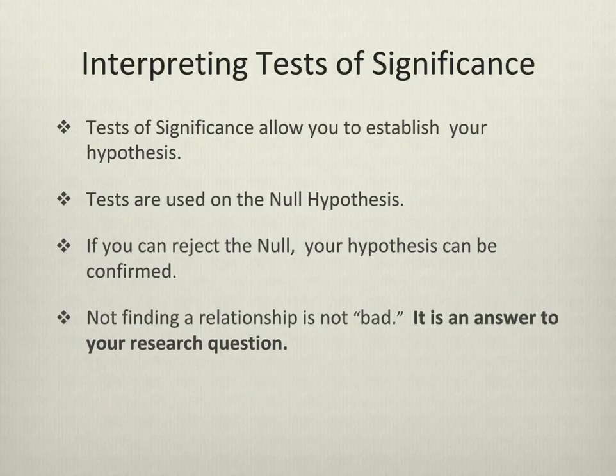Tests of significance allow you to test your hypothesis by testing the null. If there is not no relationship, there is a relationship between the variables — it may be very poor English, but that's how statistics work. If you don't find a relationship, this isn't a bad thing. Don't become concerned if, when you test your hypothesis, some or all of them turn out to not be statistically significant. You can still write a good paper explaining your results. Not finding a relationship is still an answer to your research question.